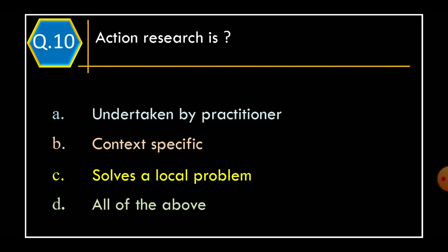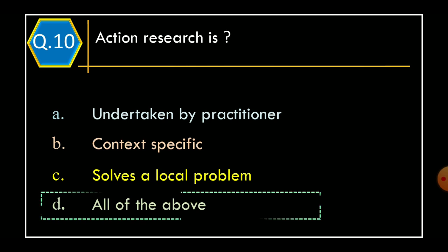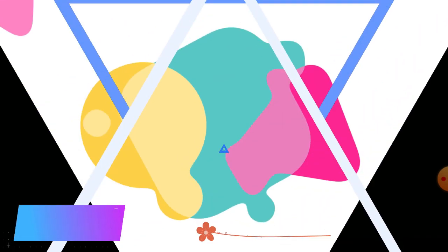Question 10: Action research is — Option A: undertaken by practitioner. Option B: context-specific. Option C: solves a local problem. Option D: all of the above. The correct option is Option D, all of the above. Thanks for watching.